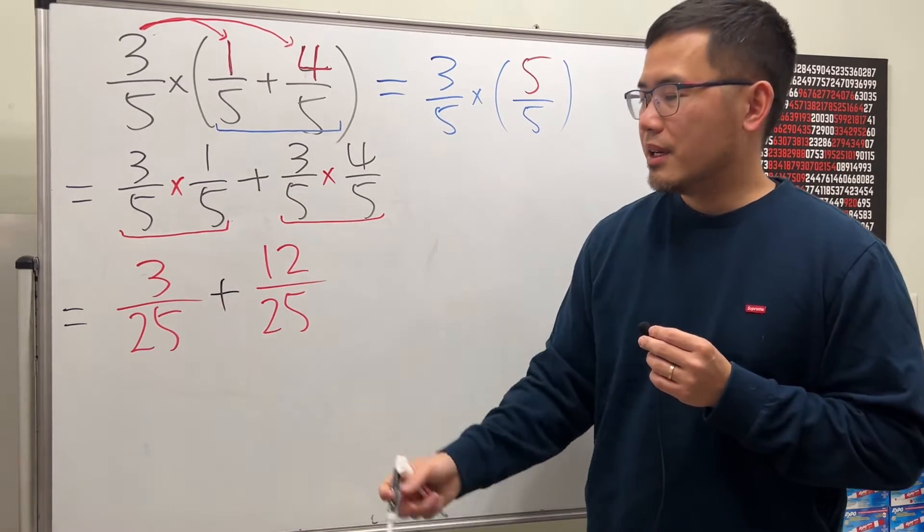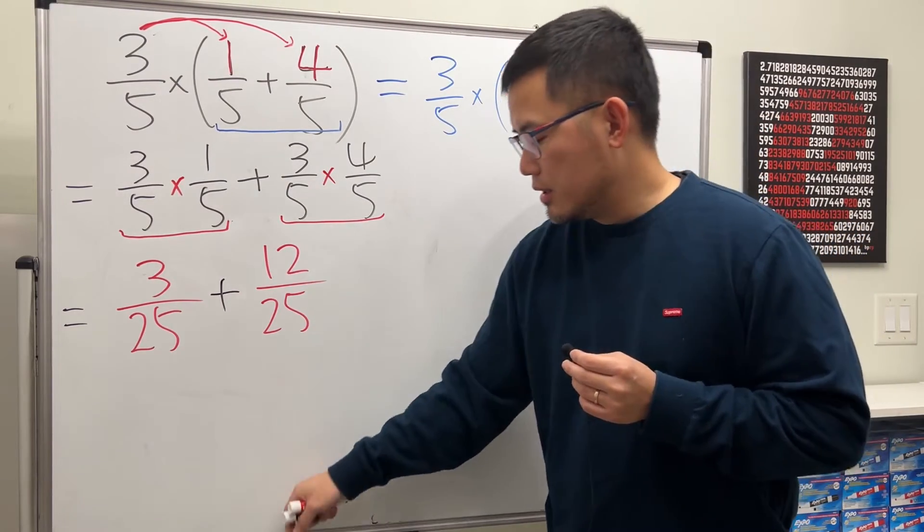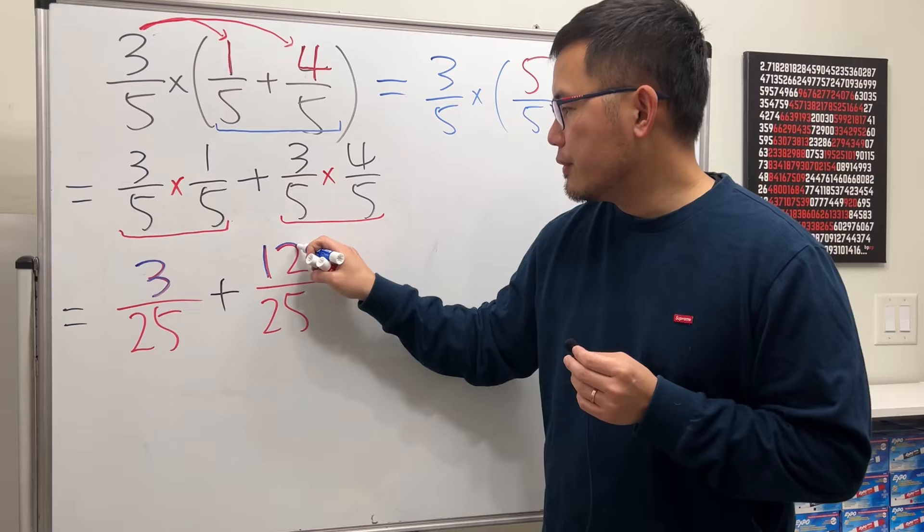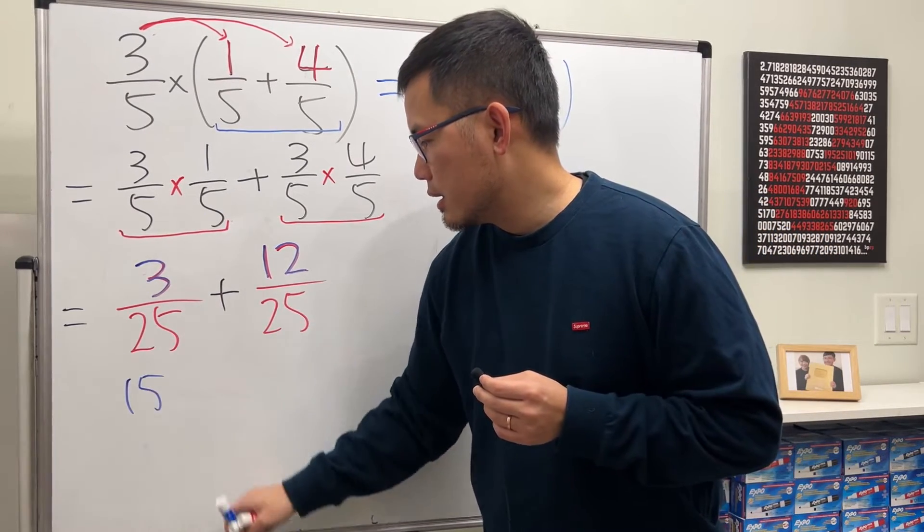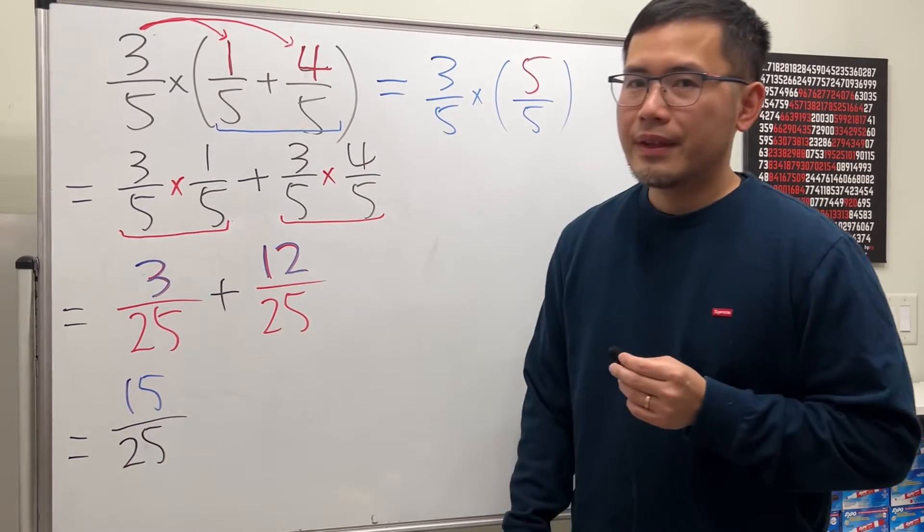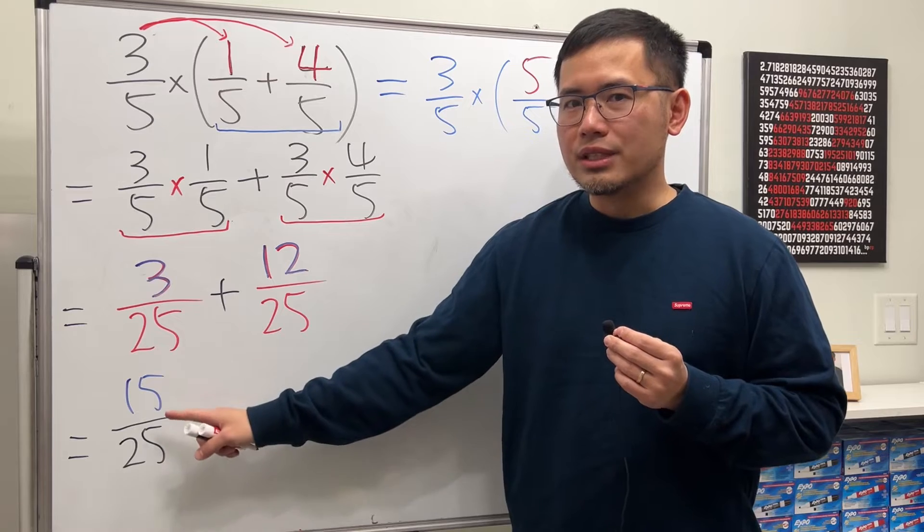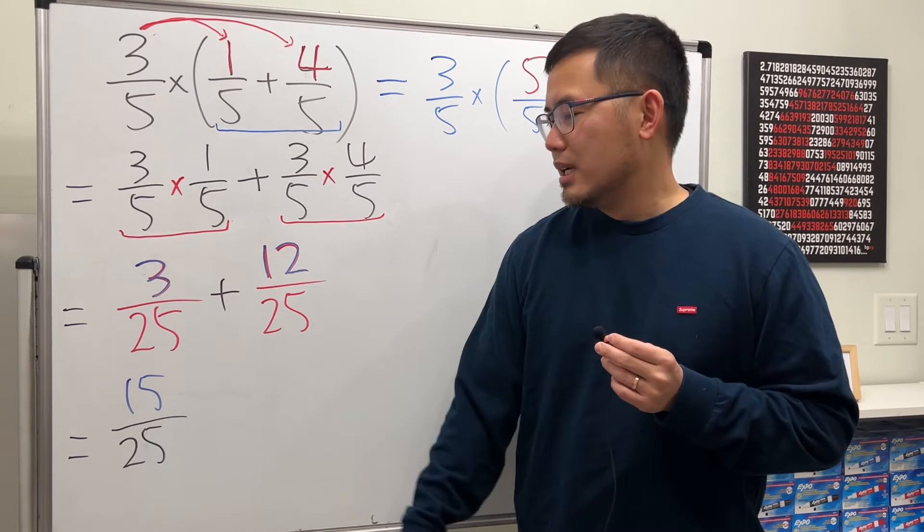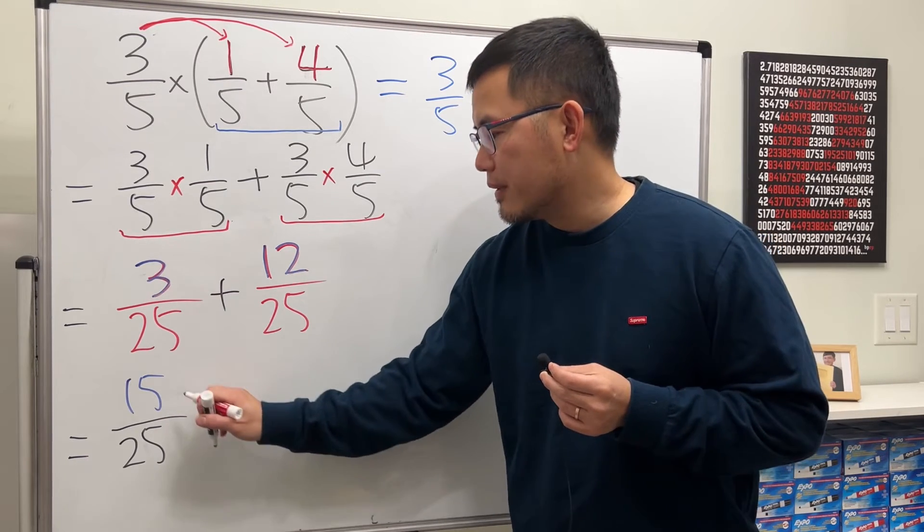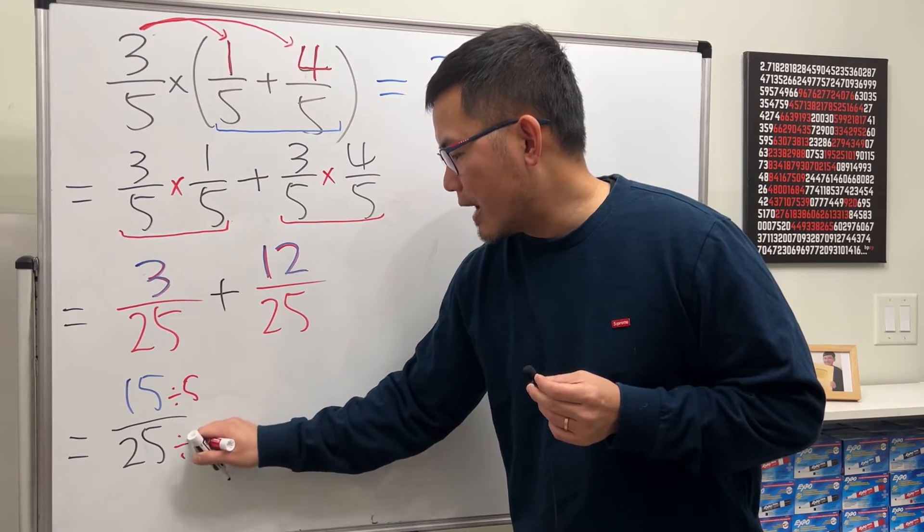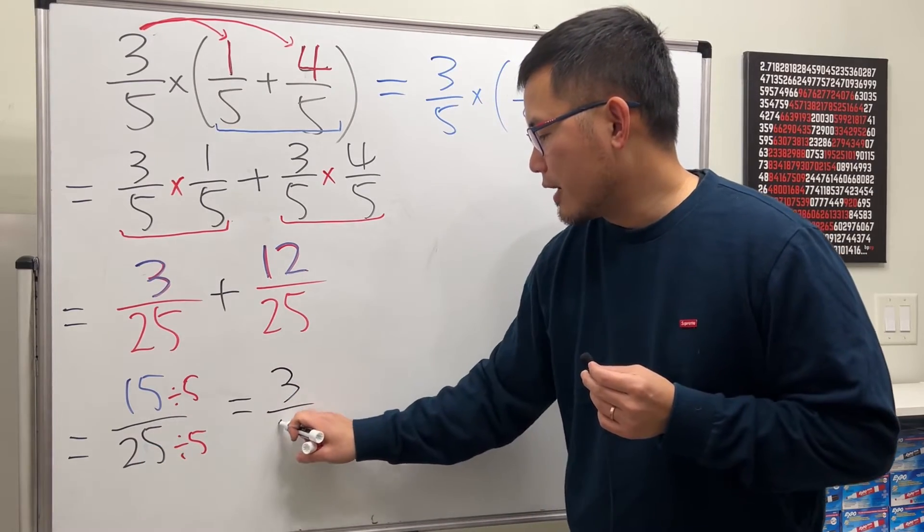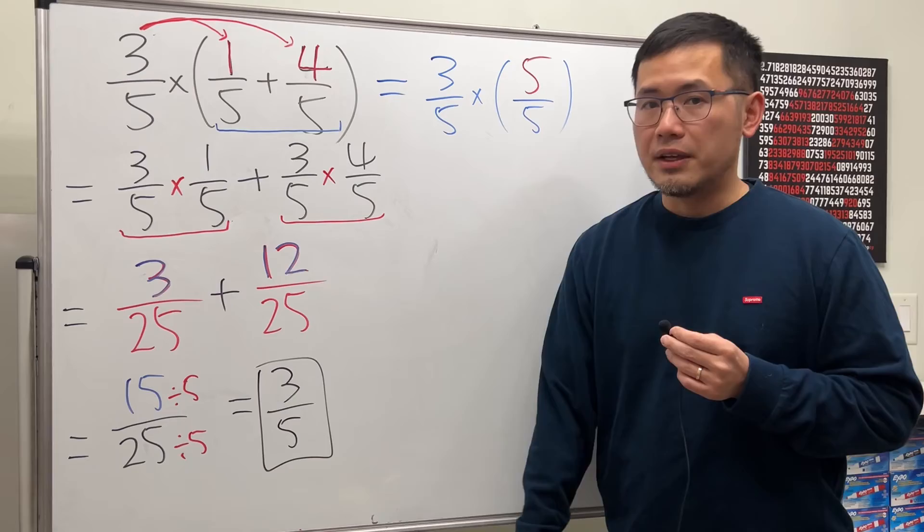Have a look. They have the same denominator. So, we can just add the numerators. 3 plus 12 is 15. So, this is equal to 15 over 25. Finally, ask ourselves, can we reduce this fraction? Yes, because 15 is divisible by 5, and likewise, 25 is divisible by 5. So, divide this by 5 and divide that by 5. We get 15 divided by 5, we get 3. Over 25 divided by 5, we get 5. So, that is the final answer.